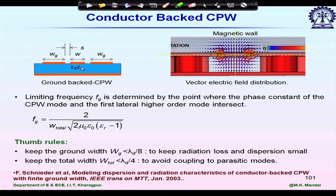Welcome back. We are continuing with the ground-backed CPW line. In a ground-backed CPW line, we have one additional ground plane. If we plot the electric field inside the structure, we can see the basic CPW line, and the central part looks like a microstrip line because of the additional ground plane. The CPW mode has the electric field parallel to the dielectric-air interface.